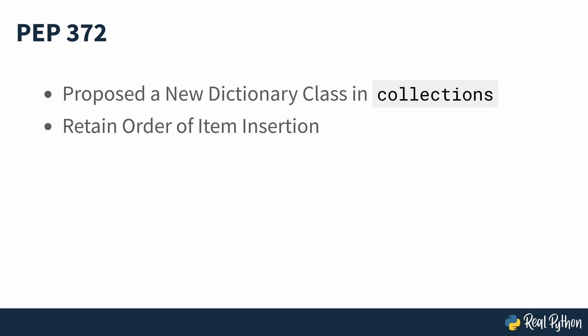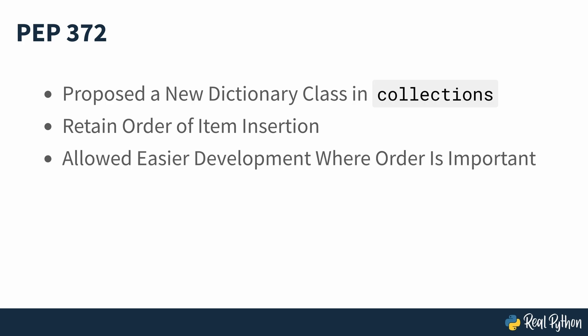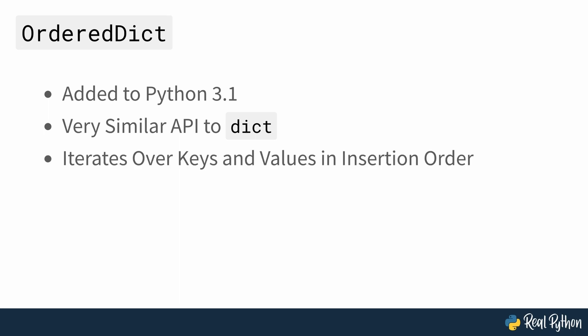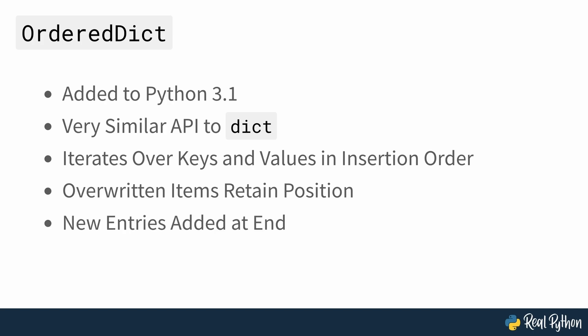Core Python developers wanted to fill in the gap and provide a dictionary that could preserve the order of inserted keys. That, in turn, allowed for a more straightforward implementation of specific algorithms that rely on this property. OrderDict was added to the standard library in Python 3.1. Its API is essentially the same as Dict. However, OrderDict iterates over keys and values in the same order that the keys were inserted. If a new entry overwrites an existing entry, then the order of items is left unchanged. If an entry is deleted and reinserted, then it will be moved to the end of the dictionary.